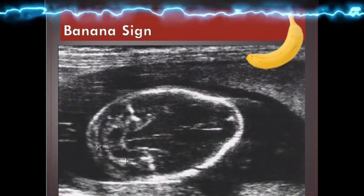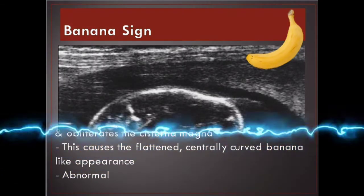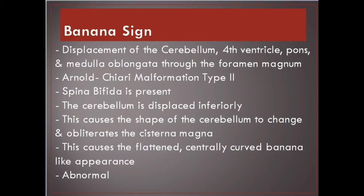Banana sign. Displacement of the cerebellum, 4th ventricle, pons, and medulla oblongata through the foramen magnum — Arnold Chiari malformation type 2. Spina bifida is present. The cerebellum is displaced inferiorly, causing its shape to change and obliterating the cisterna magna. This produces the flattened, centrally curved banana-like appearance. Abnormal.